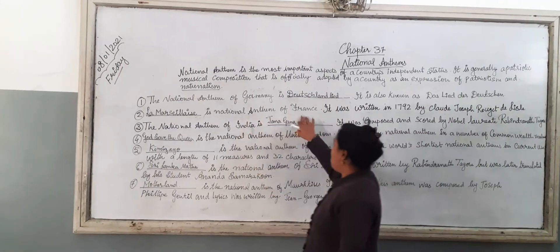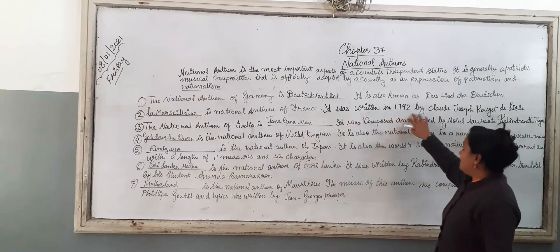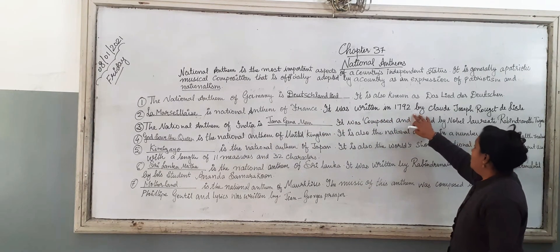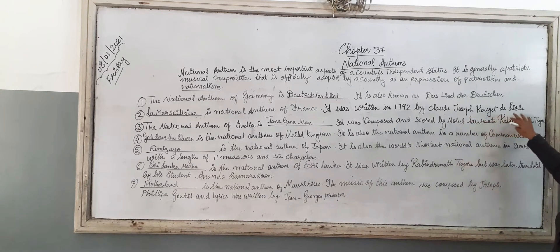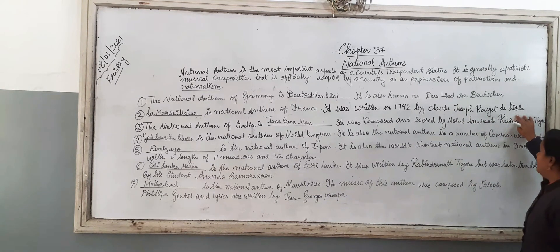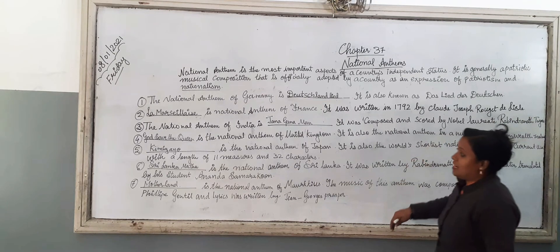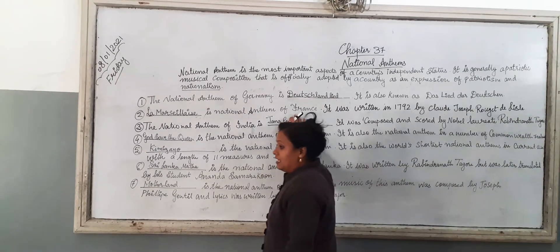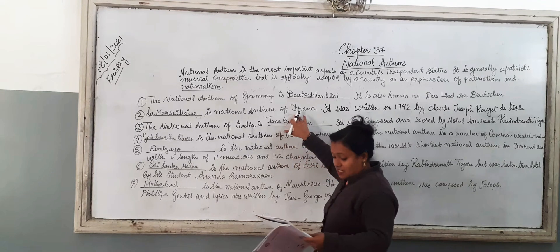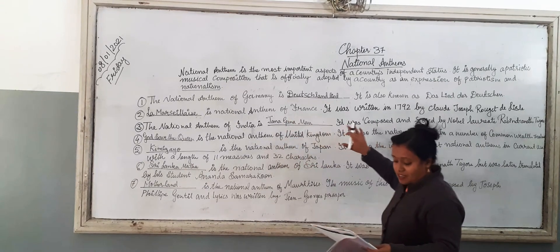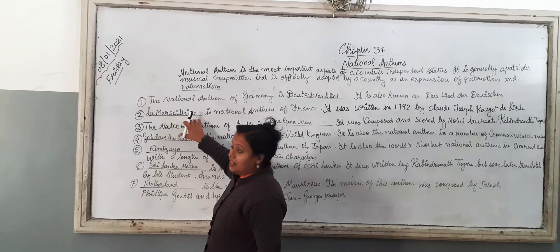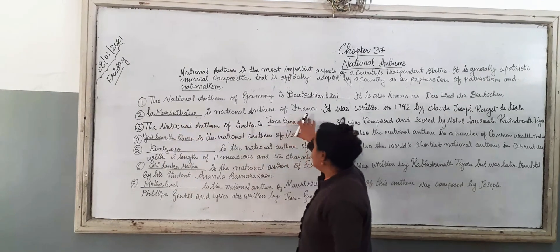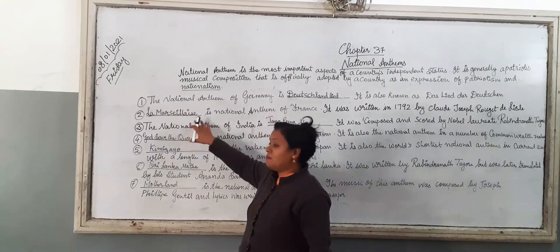The National Anthem of France is La Marseillaise. It was written in 1792 by Claude Joseph Rouget de Lisle. The National Anthem of France is La Marseillaise.